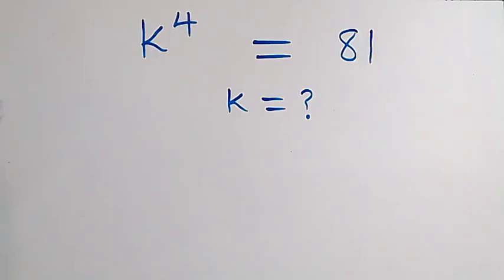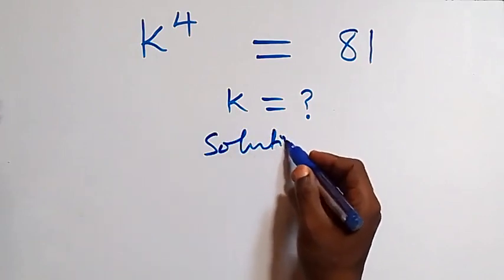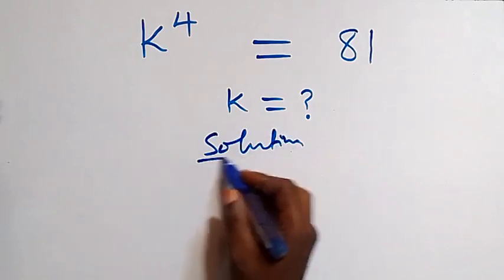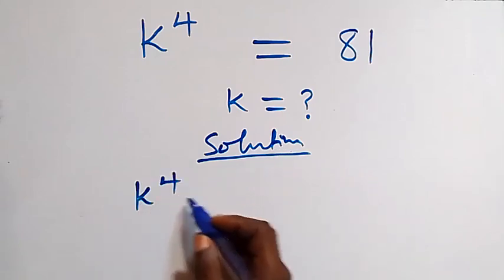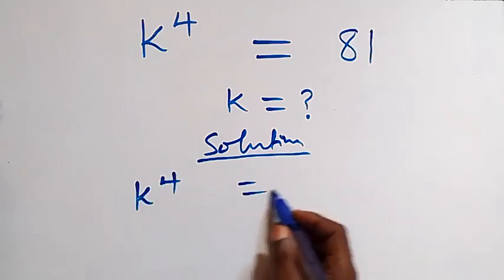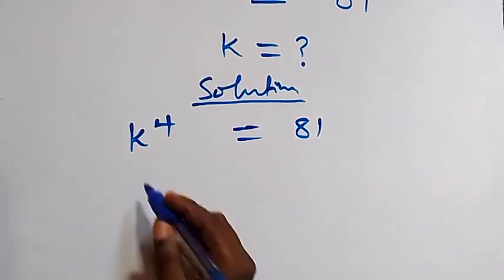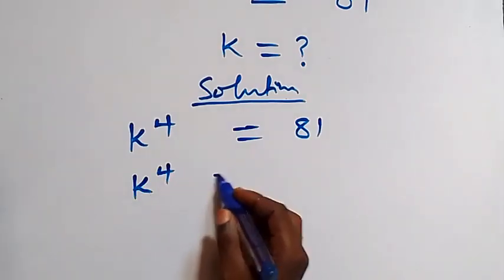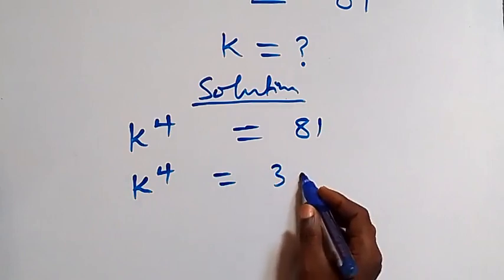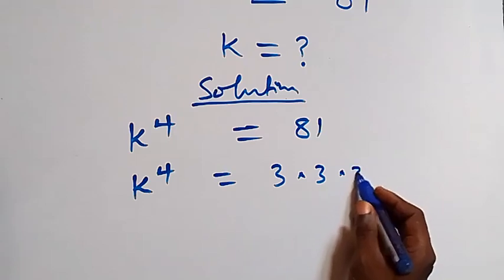Hello, you're welcome. Here is how to solve this nice algebra problem. From what is given, which is k raised to power 4 equals 81, we can rewrite this as k raised to power 4 equals 3 times 3 times 3...